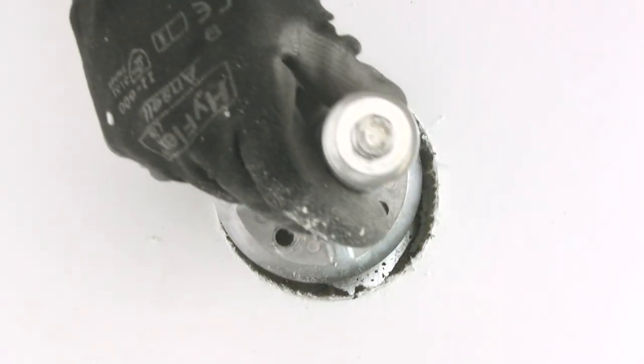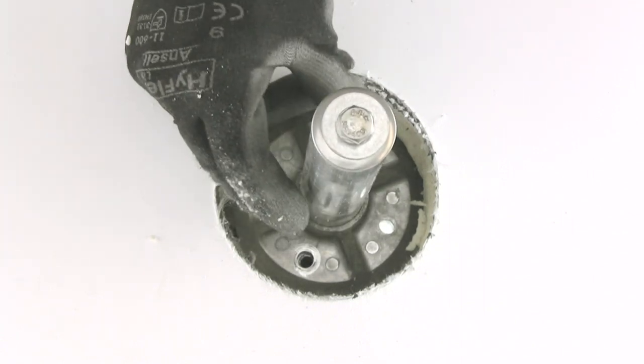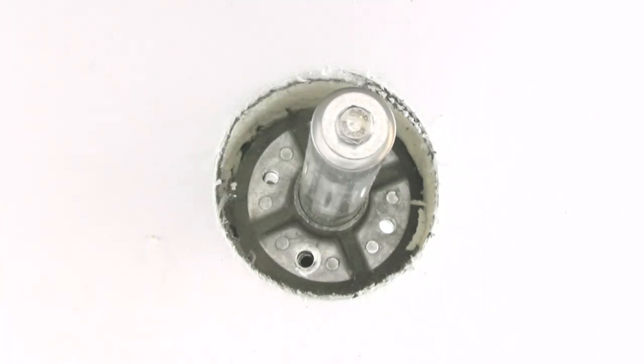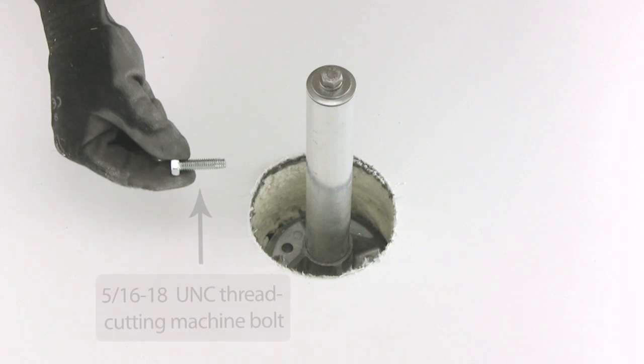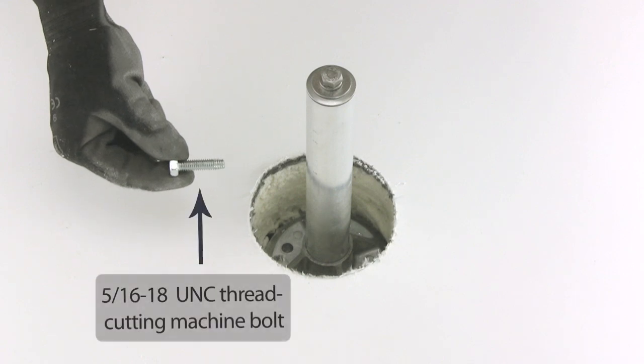In this demonstration, we're going to use the first of these three methods and bolt down the mount using two 5-16-18 UNC thread cutting machine bolts. We recommend using this time-saving method whenever possible.